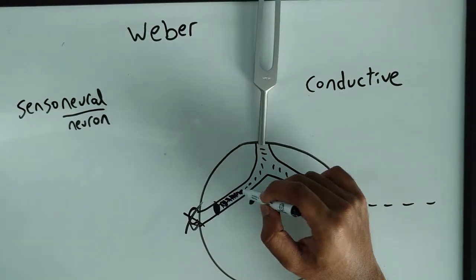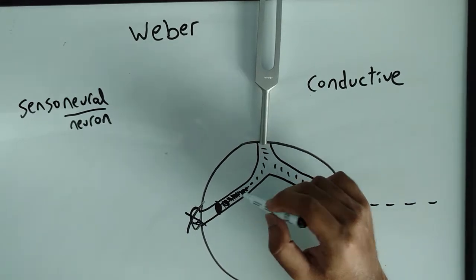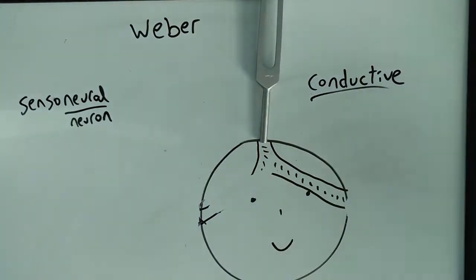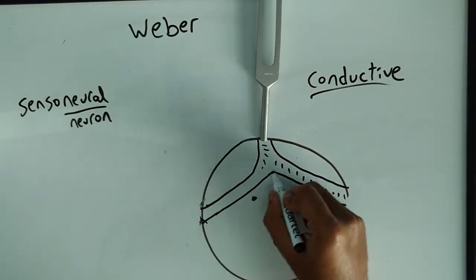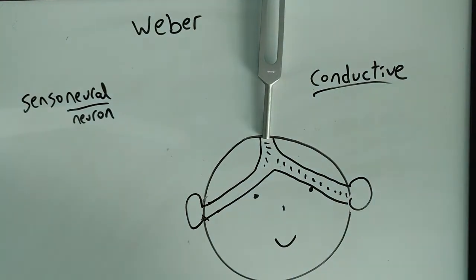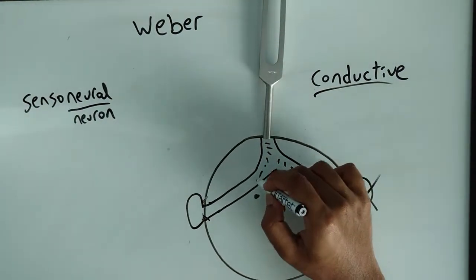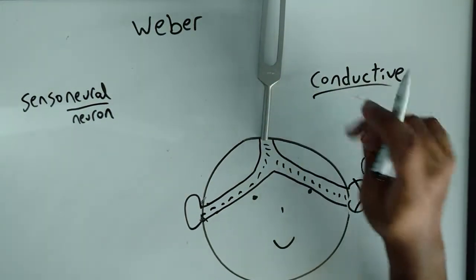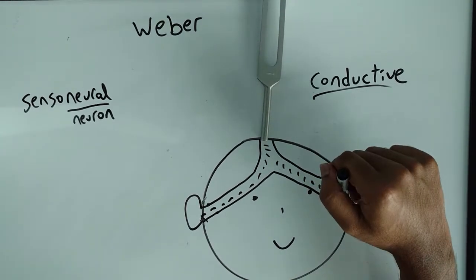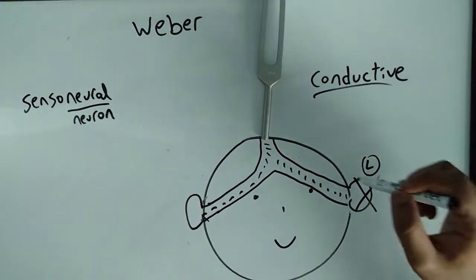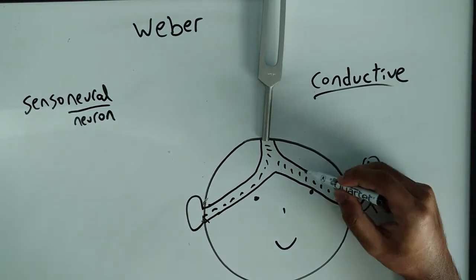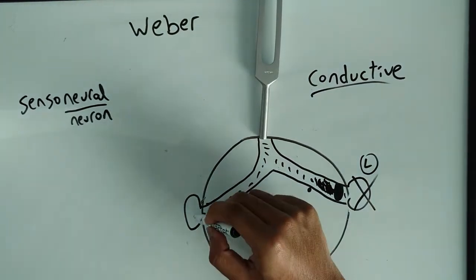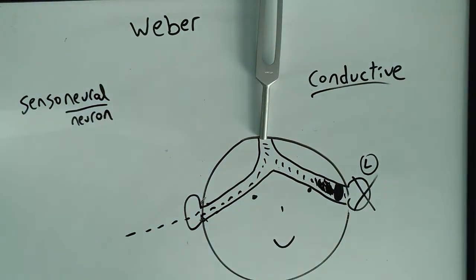A patient comes in with right-sided hearing loss. You do the Weber test, and if it's louder on the side of the bad ear, that's conductive hearing loss. Similarly, a patient with left-sided hearing loss — the left side is bad. When you do the Weber test and the patient says they feel it more on the left side, the bad side, then it's conductive. Because there's a blockage, the sound waves are obstructed, they pile up and get louder. The right side is good and exits peacefully. So in conductive hearing loss, the sound lateralizes to the bad ear.